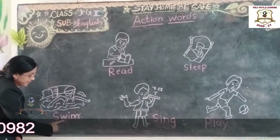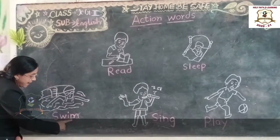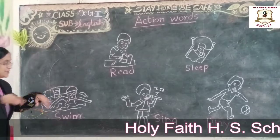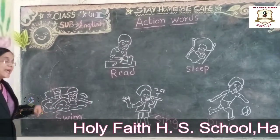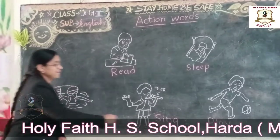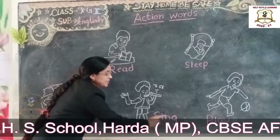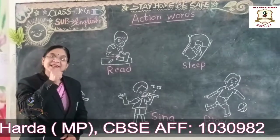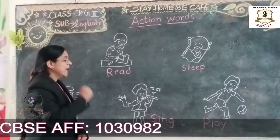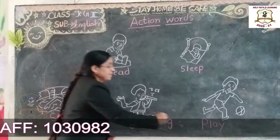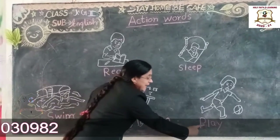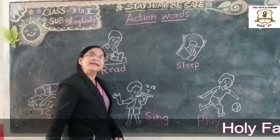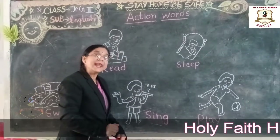Swim. S, W, I, M — Swim. Swim means tairna. S, I, N, G — Sing. Sing means gaana. P, L, A, Y — Play. Play means खेलना.